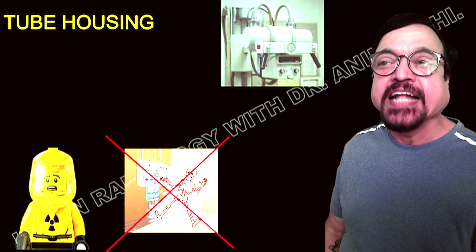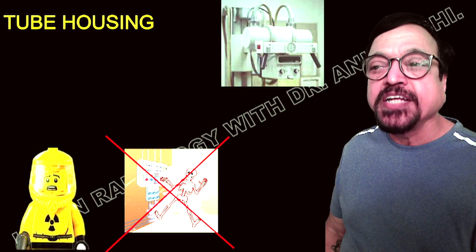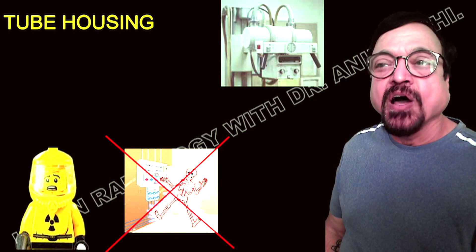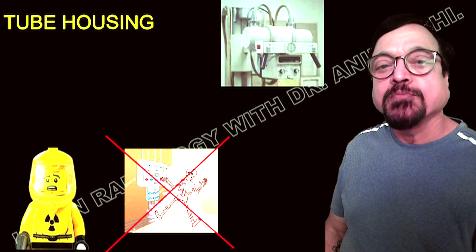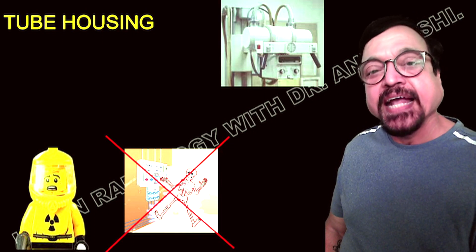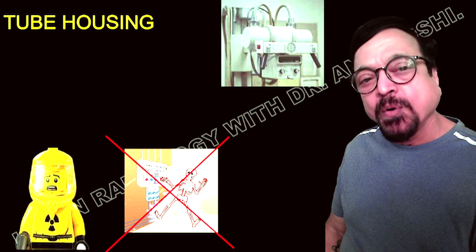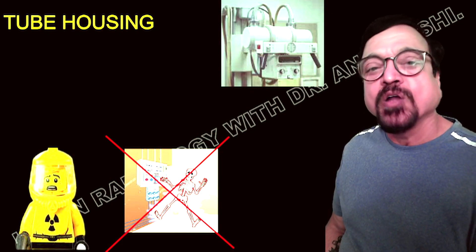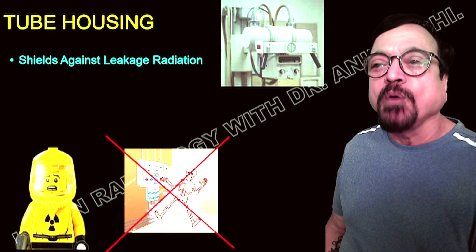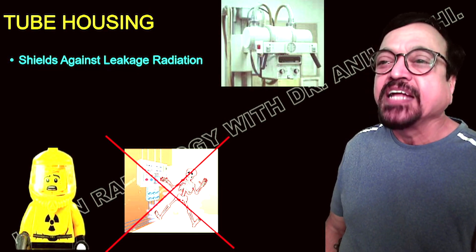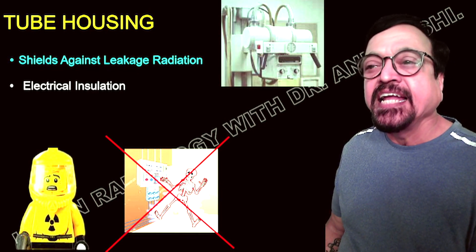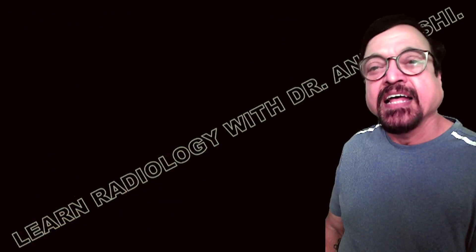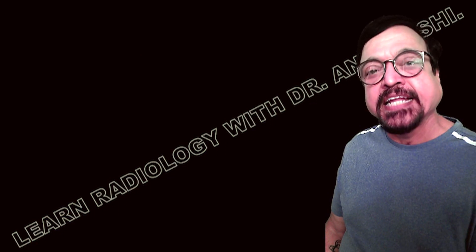The tube housing is the outer layer. Its main aim is to protect what is inside, since high voltages are transferring from anode to cathode and x-rays are being produced. The housing does two things: it protects you, and it allows x-rays to exit in a specified area which can be collimated, restricted, or filtered. So the tube housing is a shield against radiation leakage and also acts as an electrical insulator.